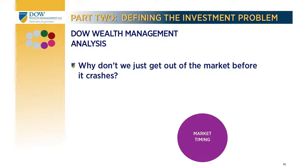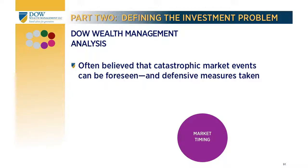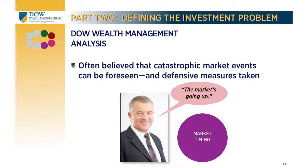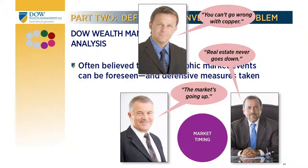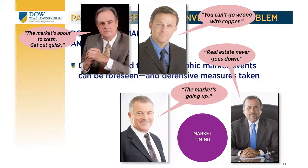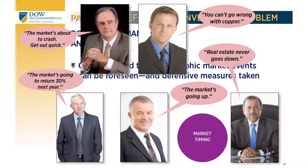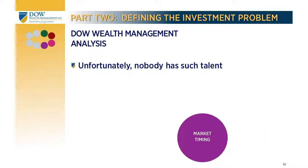Understanding how financial markets behave is an important consideration. If economic crises happen from time to time, why don't we just get out of the market before it crashes? If we see a storm coming, just pull into a safe harbor and wait it out — certainly that would seem like the prudent approach. But consider a few familiar characters: one says the market's going up, another says real estate never goes down, another says you can't go wrong with copper, another says the market's about to crash — get out quick, and the last says the market's going to return 30% next year.